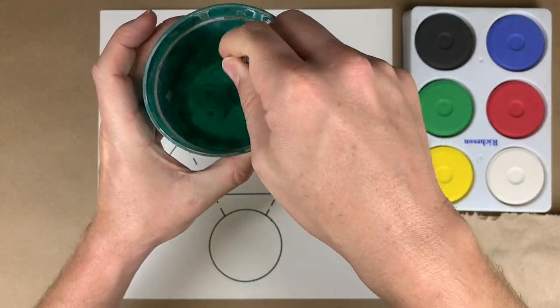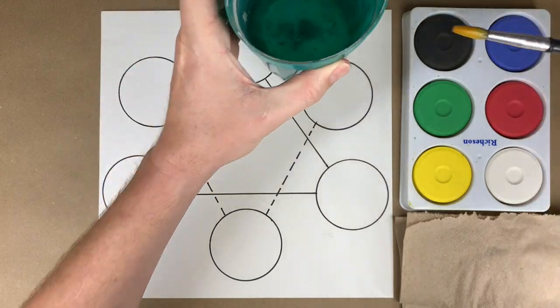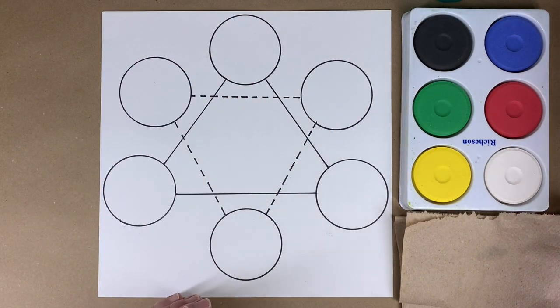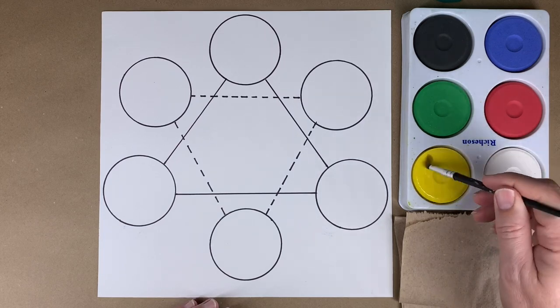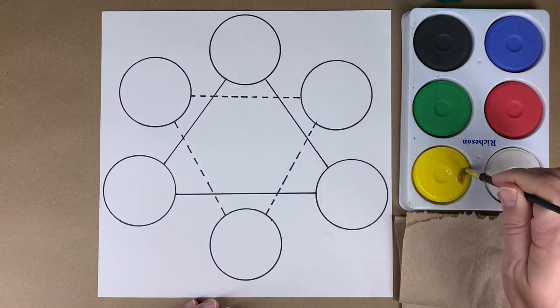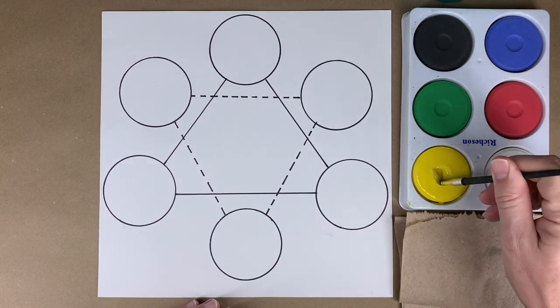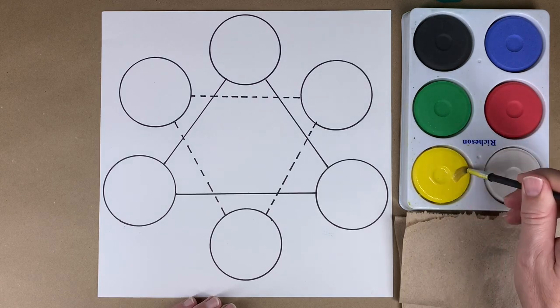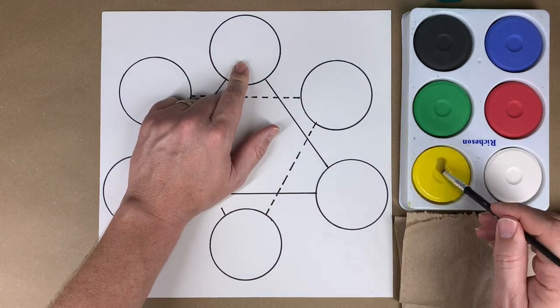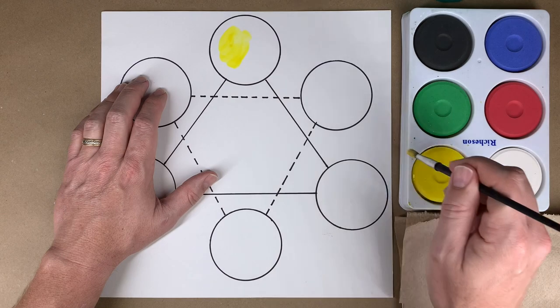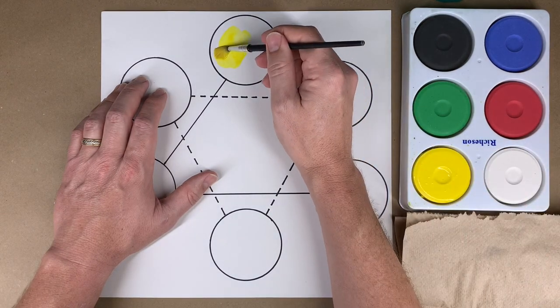I'm wetting my brush in the water cup, wiping it on the edge. First, I'm going to start with yellow. So I go to the tempera cake that is yellow, swish around the brush. I get enough paint on my brush. I'm going to paint the top circle yellow. Yellow is a primary color, that's one of the first colors.